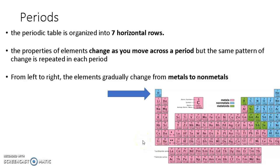The properties of elements change as you move across a period, but the same pattern of change is repeated in each period. So basically what I'm saying is when you're moving from left to right, the elements gradually change from metals to non-metals.